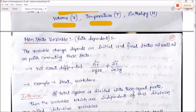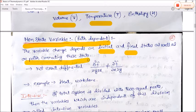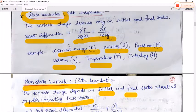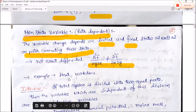Next are non-state variables. Non-state variables are path-dependent — the variable change depends on the initial and final states as well as on the path connecting these states. These are not exact differentials, just the opposite of state variables. Examples include heat and work.